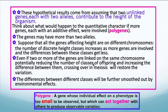These hypothetical results come from assuming that two unlinked genes, each from different chromosomes, each with two alleles, contribute to the height of the organism. Think about what would happen to the quantitative character if more genes, each with an additive effect, were involved — we're only looking at two here, but what if there were ten?